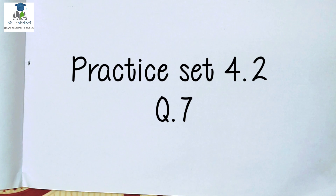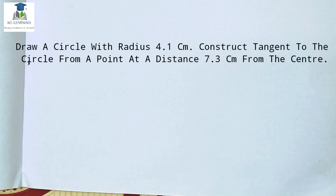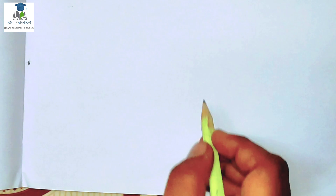Hello guys, I am back with the 10th standard geometry chapter number 4, doubt question number 7. Draw a circle with radius 4.1 cm and construct tangents to the circle from a point at a distance 7.3 cm from the center.